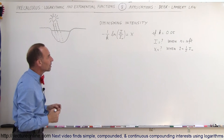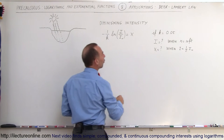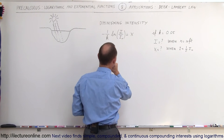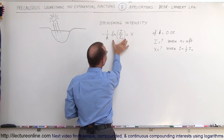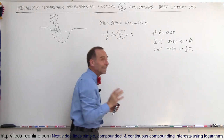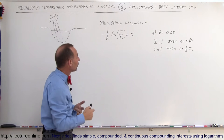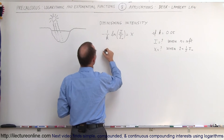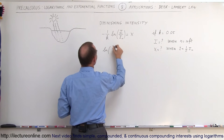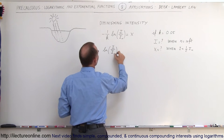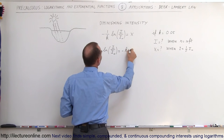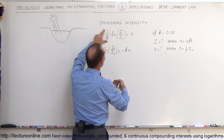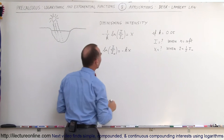We want to solve for I by plugging in a certain value for x. We need to isolate the logarithmic quantity so we can take the anti-log. We multiply both sides by -k, so that becomes: ln(I/I₀) = -kx. Multiplying by -k eliminates the -1/k factor on one side and gives us -kx on the other.